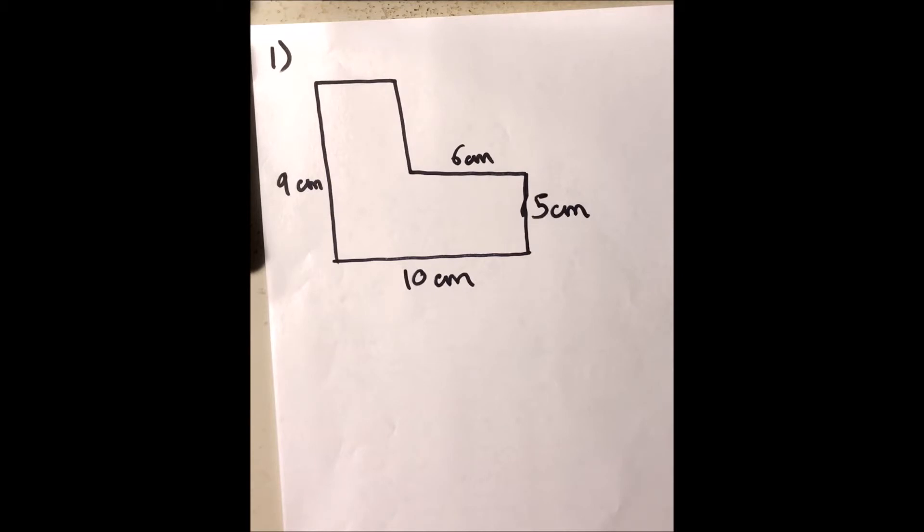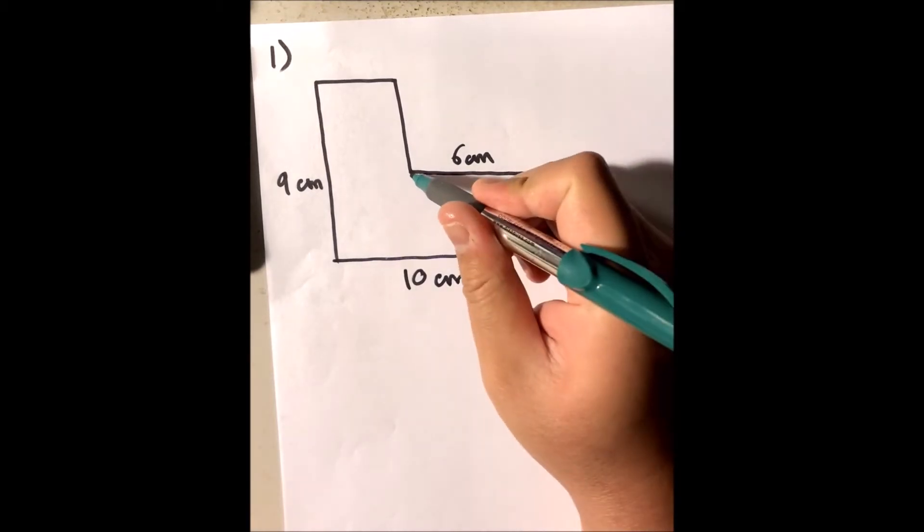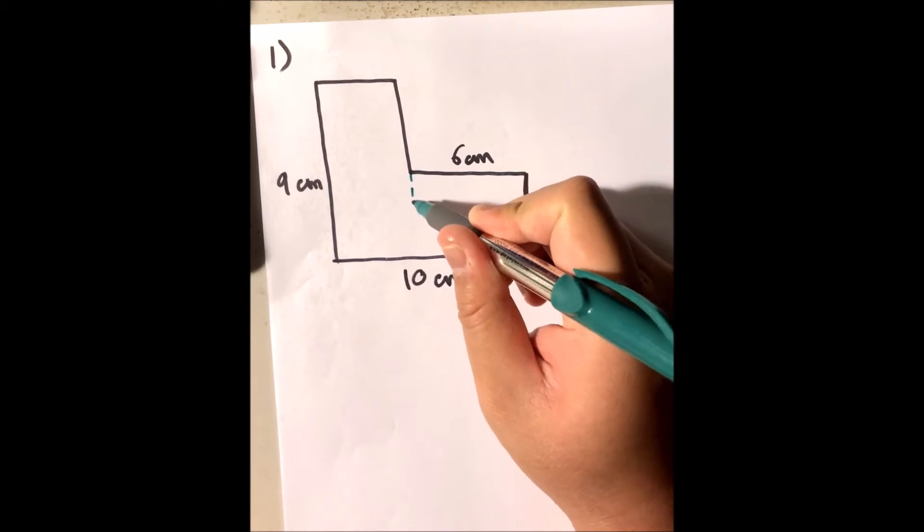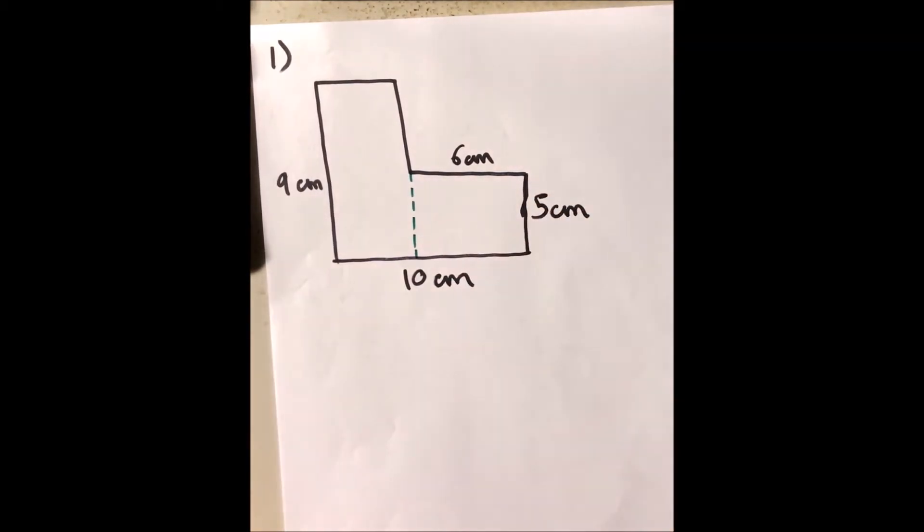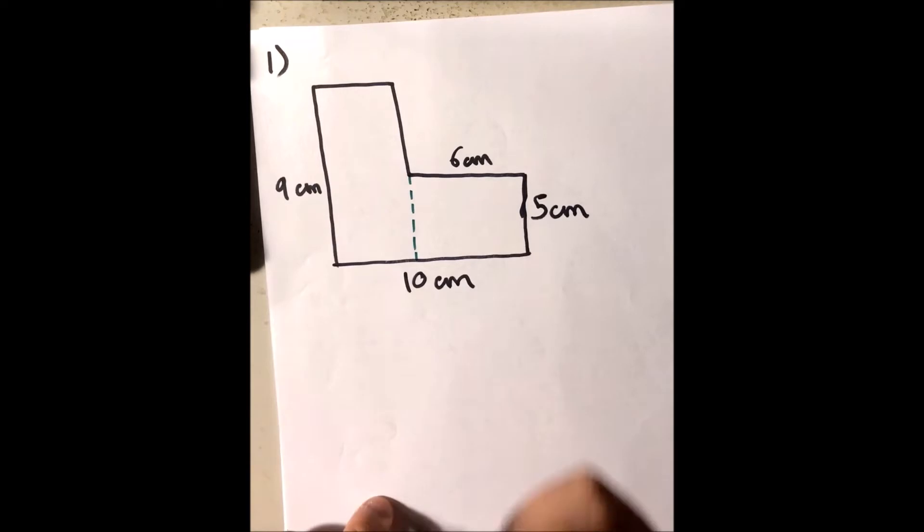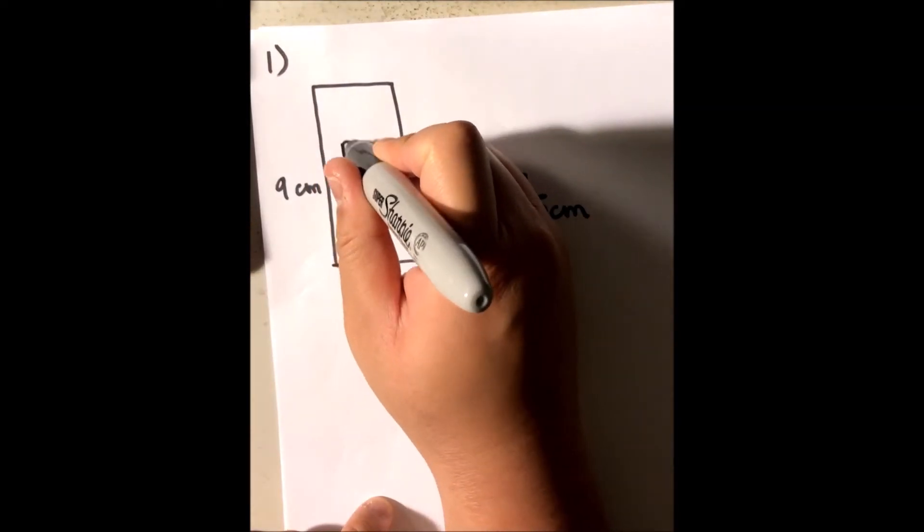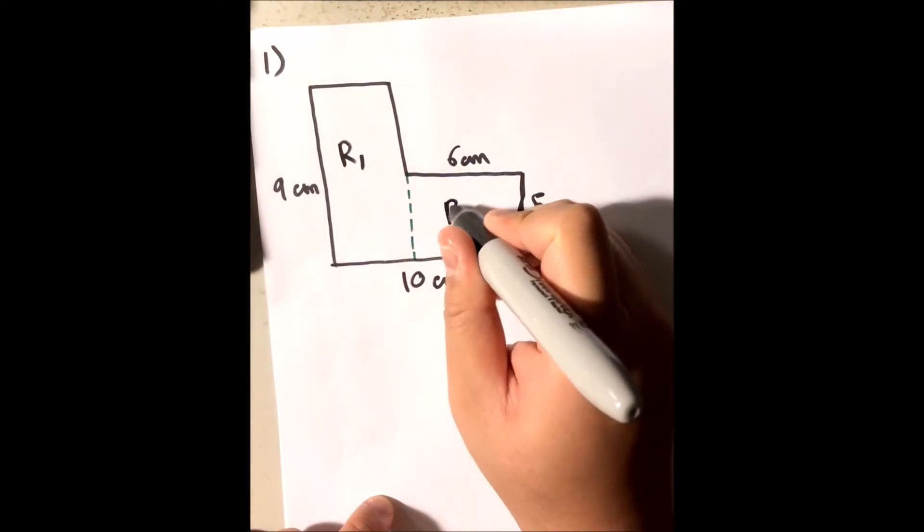If we take a look at this irregular shape, we can tell right away that if we connect this part, we got two rectangles. I'm gonna call this rectangle R1, I'm gonna call this R2.